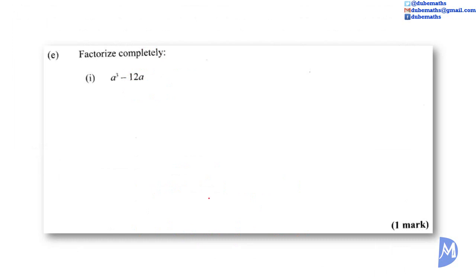And question E, part 1. Factorize completely: A cubed minus 12A. Factorizing by HCF. The HCF is A. A multiplied by A squared gives A cubed, and A multiplied by negative 12 gives negative 12A.